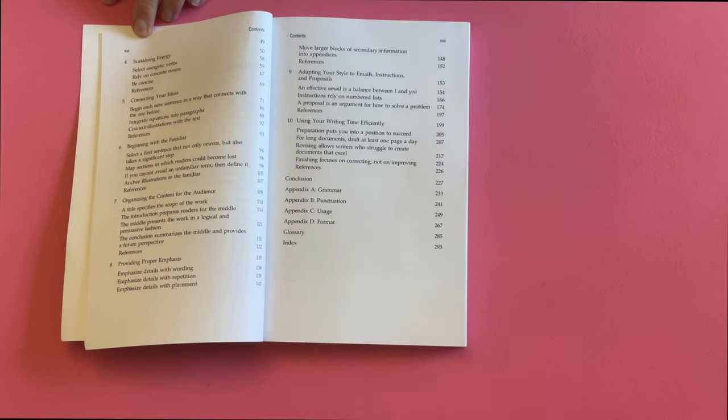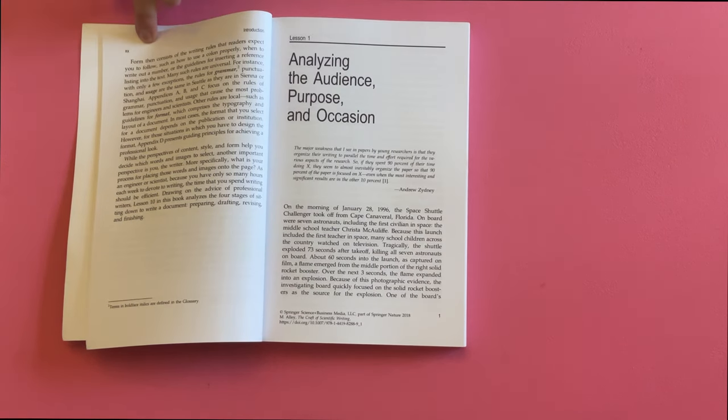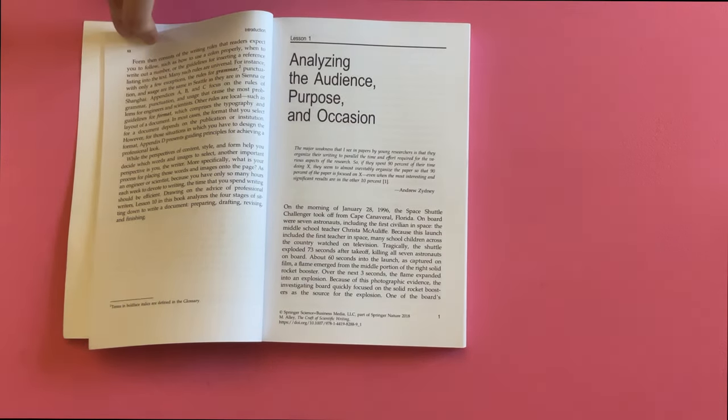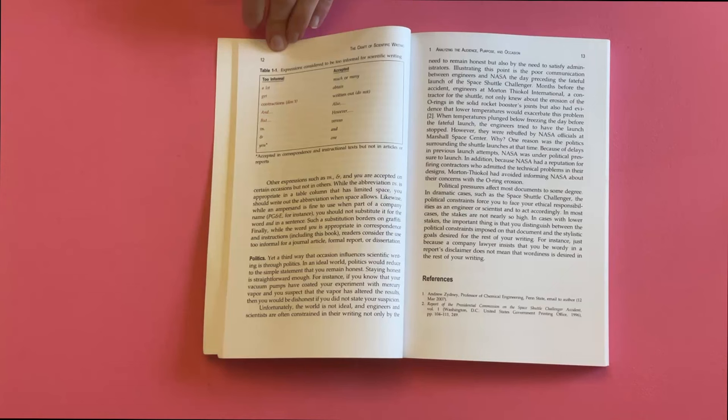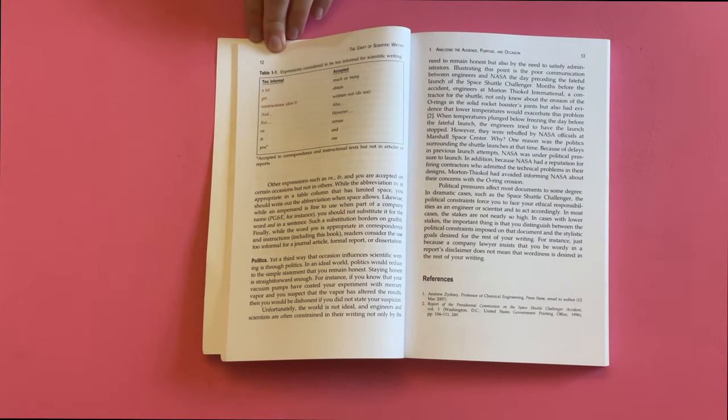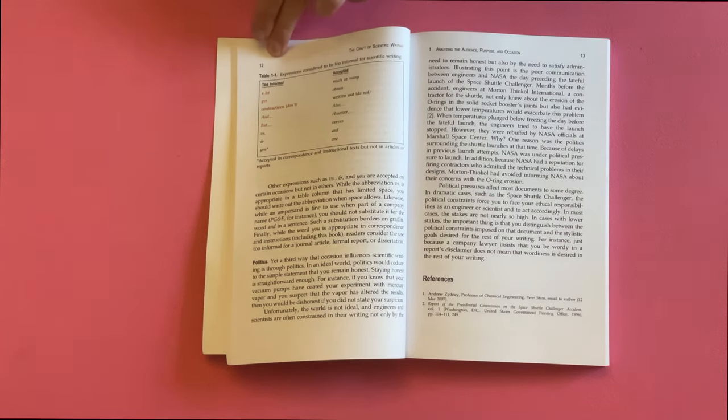The book starts off with the fundamental questions of writing. Who's the audience and what's the purpose? After that, the author emphasizes a critical decision of words, choosing the correct words, advocating for the use of active verbs and concrete nouns to maintain the energy and clarity of text.